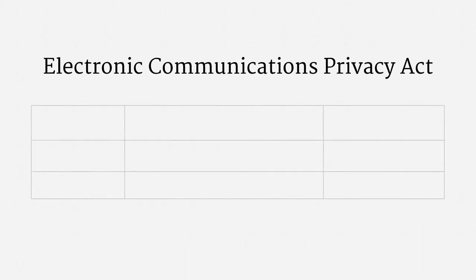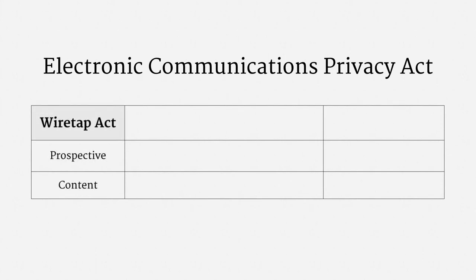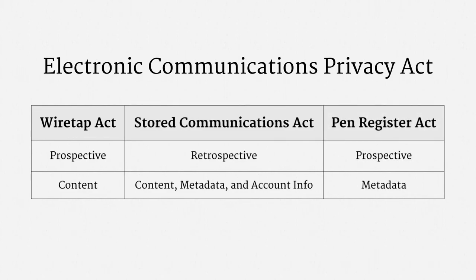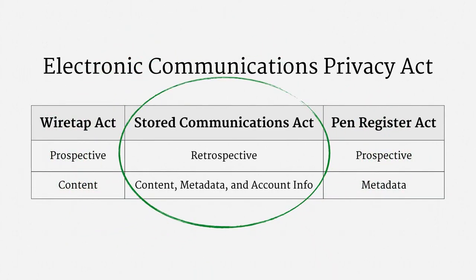ECPA has three major parts. First up is the Wiretap Act — the same Wiretap Act we saw earlier — which deals with prospective collection of communications content. The second part of ECPA is the Stored Communications Act, or SCA, which addresses retrospective collection of content, metadata, and account information. The last part of ECPA is the Pen Register Act, which deals with prospective collection of communications metadata. Since we're dealing with account information and retrospective call metadata, we're dealing with the Stored Communications Act.